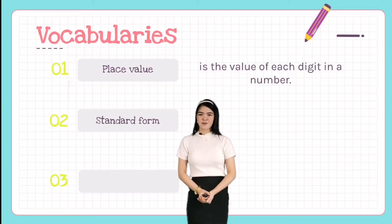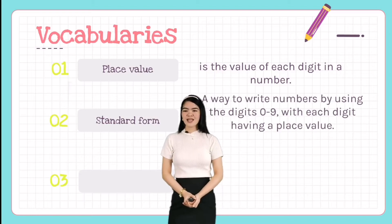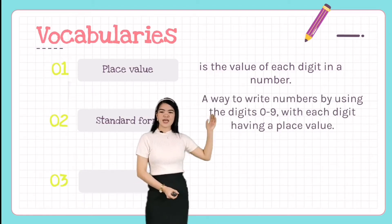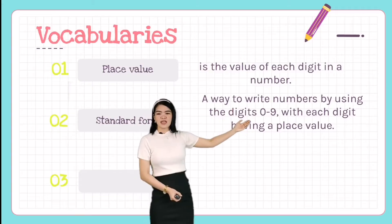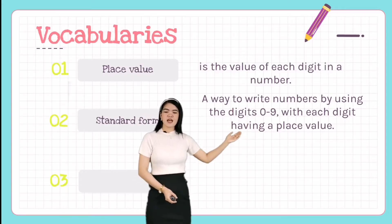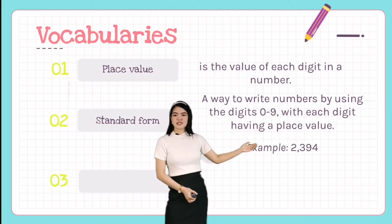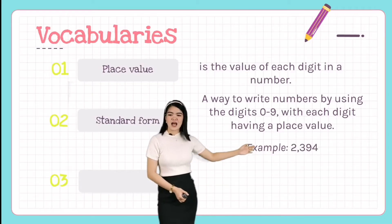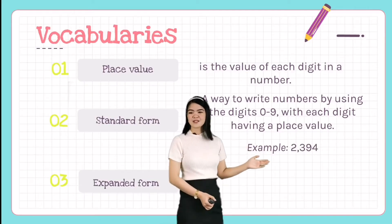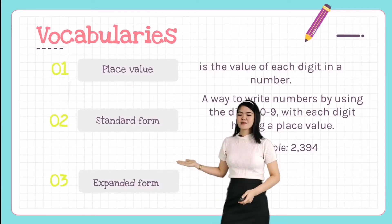The next vocabulary we have is standard form. So what is standard form? Standard form is a way to write numbers by using the digits 0 to 9, with each digit having a place value. For example, 2,394 — this is a standard form.